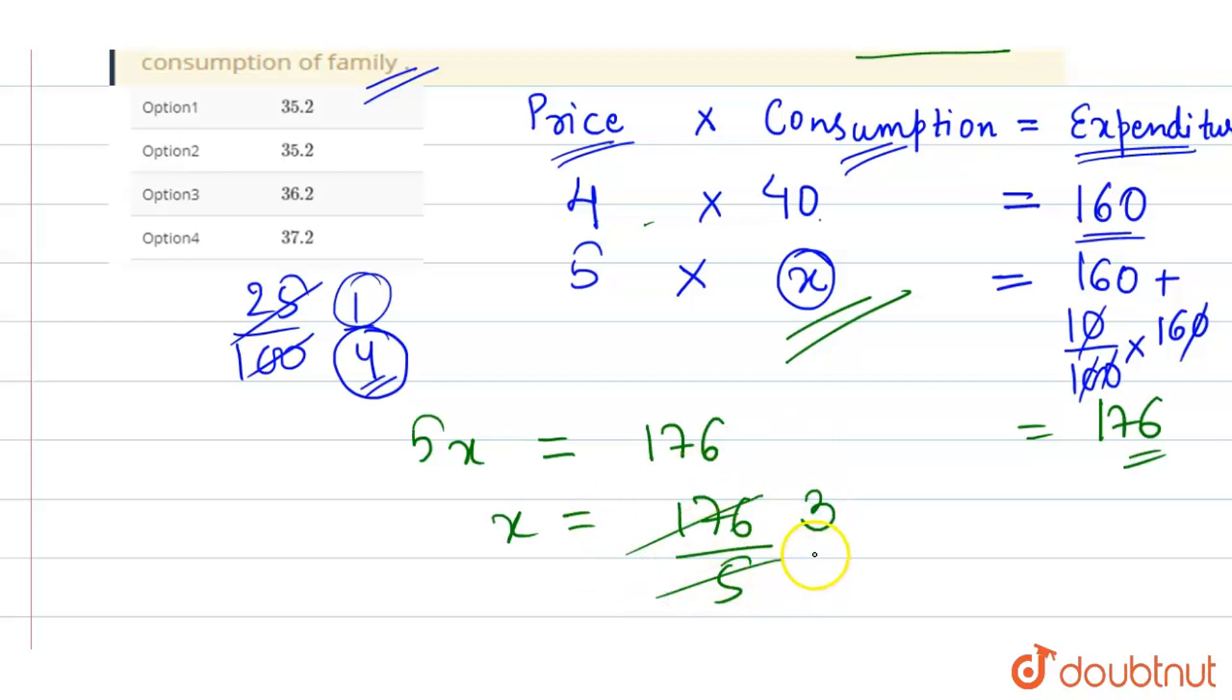So 5 into 3 is 15, remainder 2. Bring down 6, that's 26. 5 into 5 is 25, remainder 1. Put the decimal point, bring down 0, that's 10. 5 into 2 is 10. So 35.2 kg is the right answer.